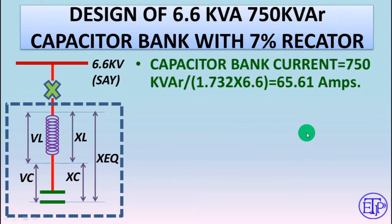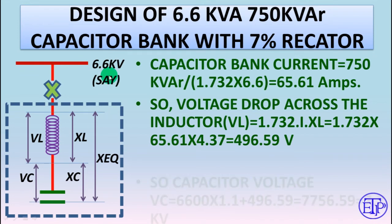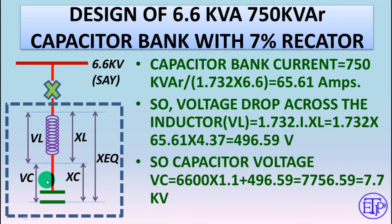The capacitor bank current is 750 KVAR / (√3 × 6.6 kV) = 65.61 amperes. The voltage drop across the inductor is √3 × I × XL = 496.59 volts. The capacitor voltage is taken as 6600 × 1.1 (a 10% margin as per Indian Standard recommendation) plus the voltage drop due to XL. So the capacitor voltage is approximately 7.7 kV — significantly higher than 6.6 kV — and due to this voltage drop, the terminal voltage will be around 6.6 kV.